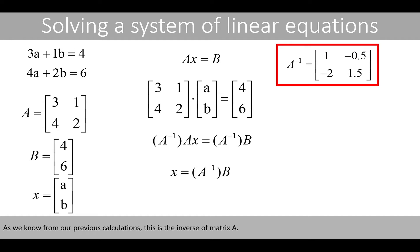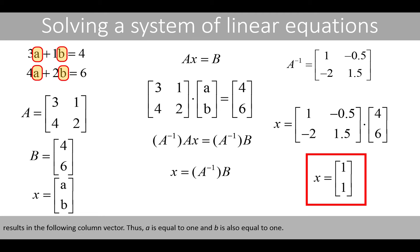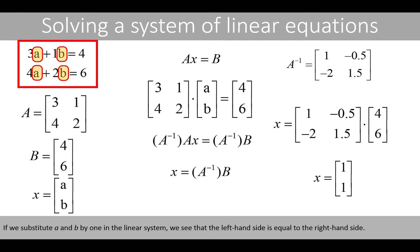As we know from our previous calculations, this is the inverse of matrix A. Multiplying the inverse of matrix A by matrix B results in the following column vector. Thus A is equal to 1 and B is also equal to 1. If we substitute A and B by 1 in the linear system, we see that the left-hand side is equal to the right-hand side.